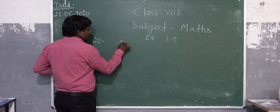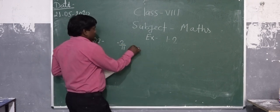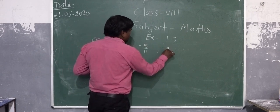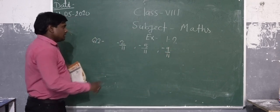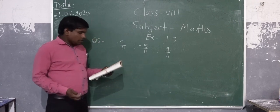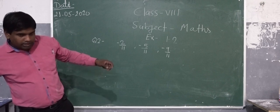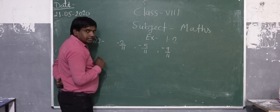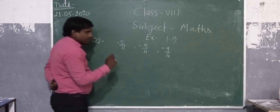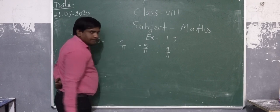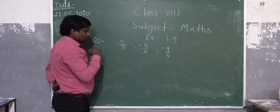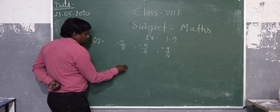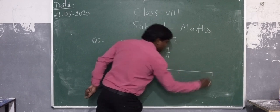Now I am going to solve question number 2: minus 2 by 11, minus 5 by 11, and minus 9 by 11 on the number line. These three numbers have to be represented on the number line. If we check here, the denominator is greater. When the denominator is greater, the rational numbers lie between 0 and 1. Here the sign is minus, so these numbers lie between 0 and minus 1. So we make a straight line here.